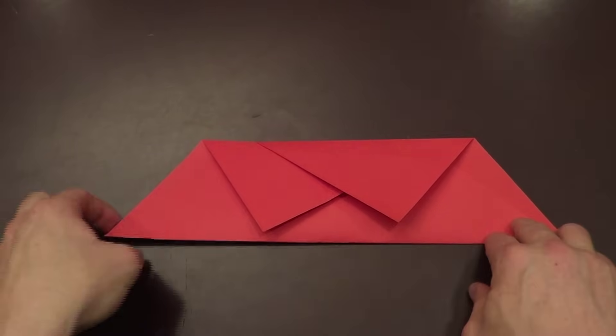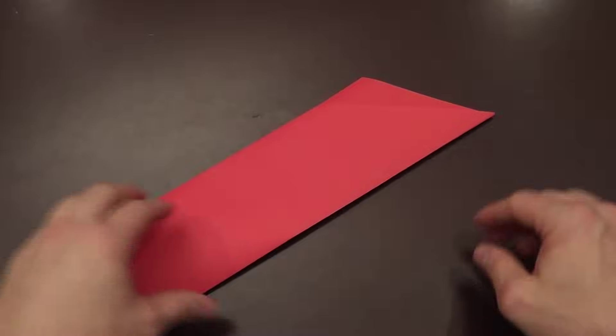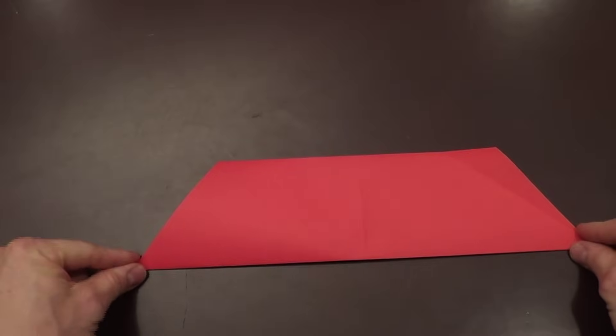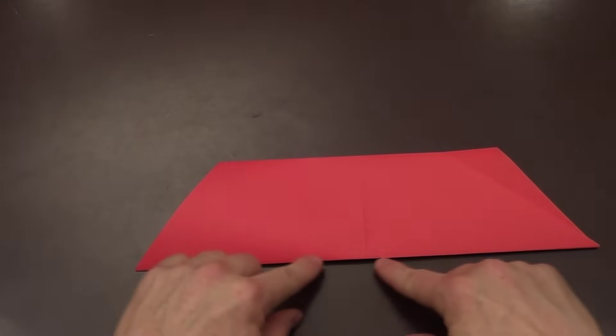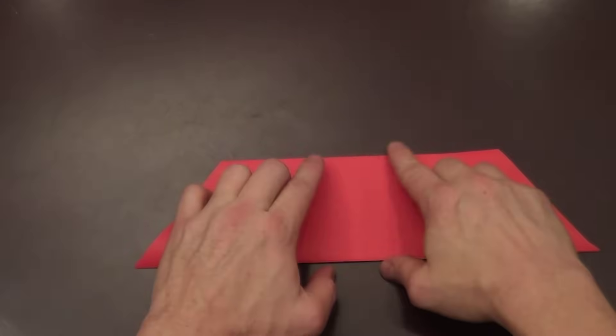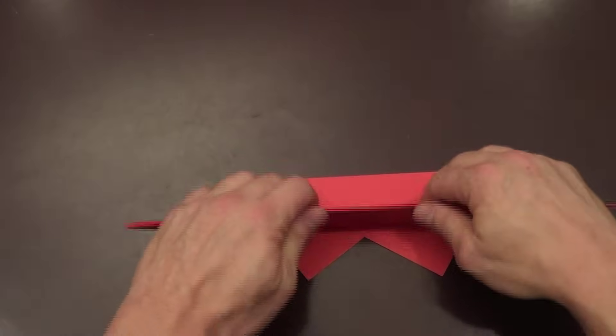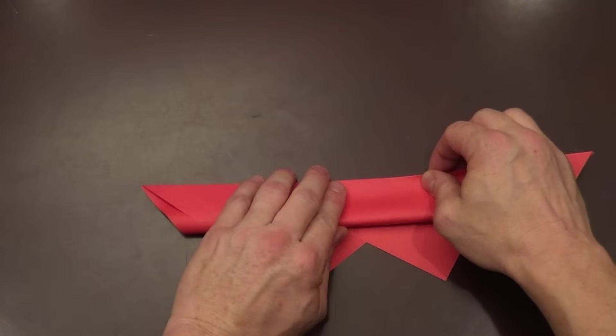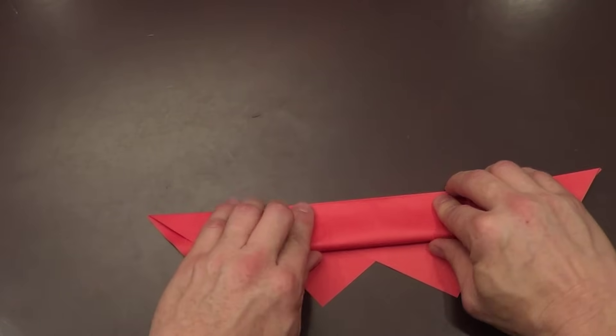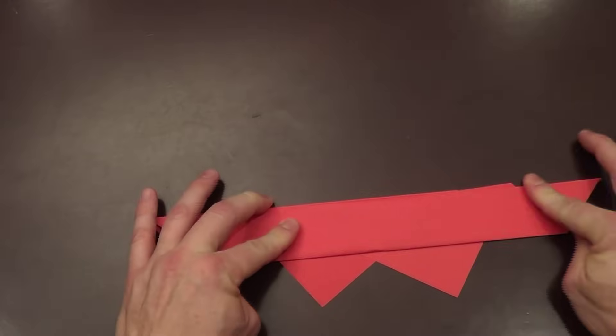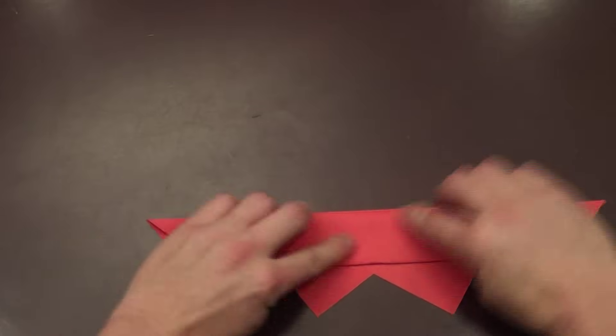So at this point we are going to flip this over, like so, and now what I am going to do is I am going to take this bottom edge here and I am going to fold it along the top edge. I am going to use that center crease to stay aligned and then I will crease that down.